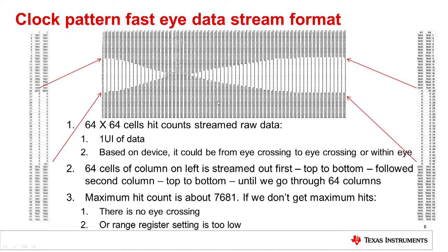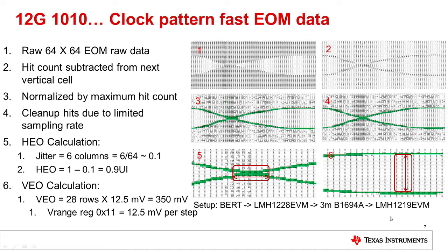I used Excel for this task. The hardware setup is as follows: I have a BERT going to LMH1228 EVM, followed by 3 meters of Belden 1694A cable, then LMH1219 EVM where I capture the eye opening. We have six waveforms for this test, and for simplicity I used a clock pattern. The first waveform is the actual raw data captured as described previously. In the second waveform, we subtract adjacent vertical cells from one cell to the next, using the absolute value of the delta between two adjacent cells.